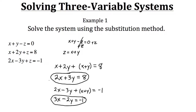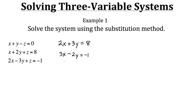Now if you look, we're left with two equations with only two variables. We can use these two equations to find out what x and y are. Let's solve this system using the substitution method, starting by isolating the x variable.